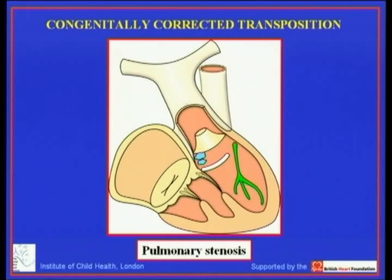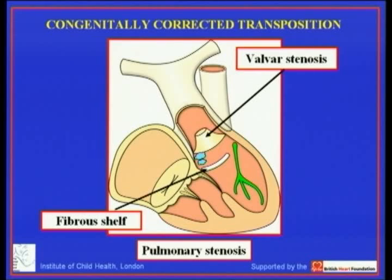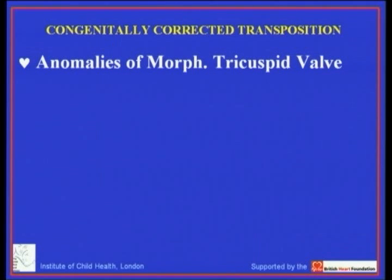For pulmonary stenosis, the same lesions producing obstruction apply as in regular transposition: stenosis can be valvar, or there can be a fibrous shelf. Tissue tags are particularly important in congenitally corrected transposition and can be removed without damaging the conduction axis — which is often not the case for a fibrous shelf, which overlies the abnormally located conduction axis.